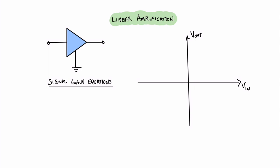In our example of linear amplification let's look at an amplifier increasing the voltage signal. On the left we have a voltage input and on the right our voltage output. This amplifier has a voltage gain A sub V, which we can write as the ratio of the output voltage to the input voltage: A sub V equals V out over V in. The units for this gain are volts per volt. However when we want to compare different types of gain we want to use a common unit.